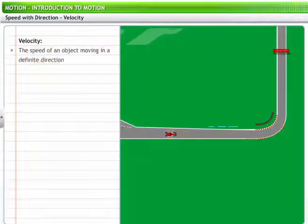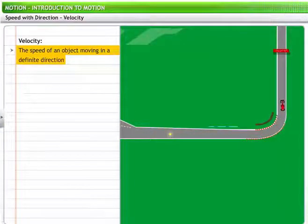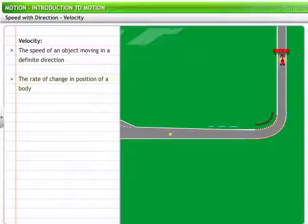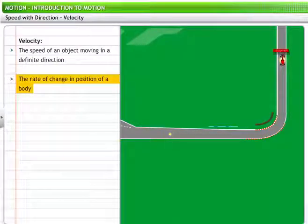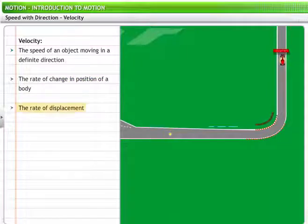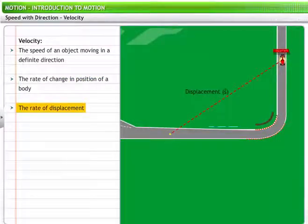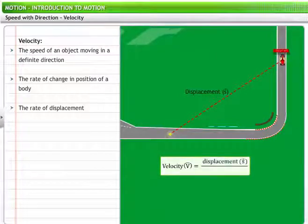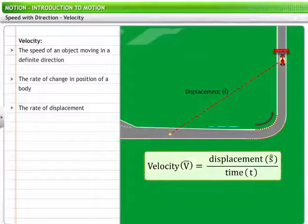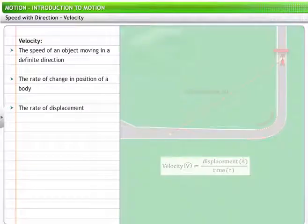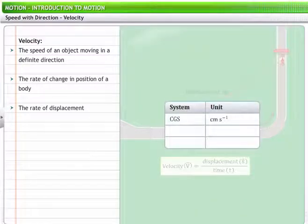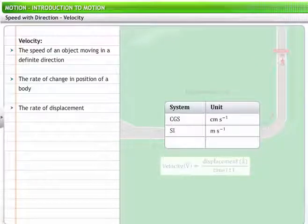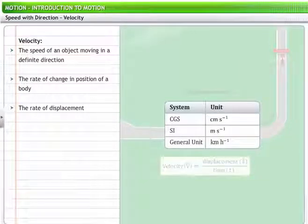Velocity is the speed of an object moving in a definite direction. Velocity of an object is defined as the rate of change in the position of a body. It can also be defined as the rate of displacement of an object. Velocity is calculated as the ratio of displacement of the object to the time interval taken for that displacement. Velocity is measured as cm per second in the CGS system and m per second in the SI system. Similar to speed, velocity is also measured in km per hour.